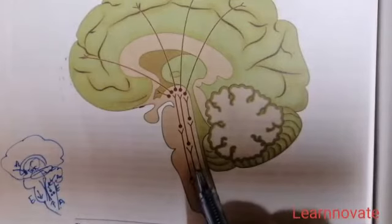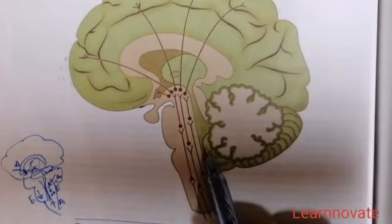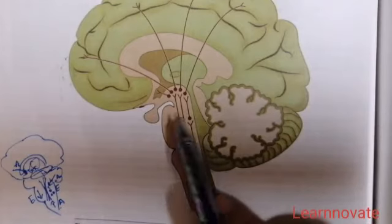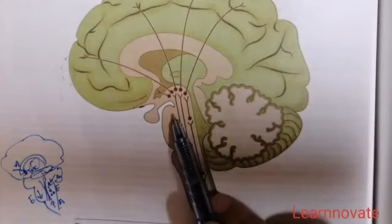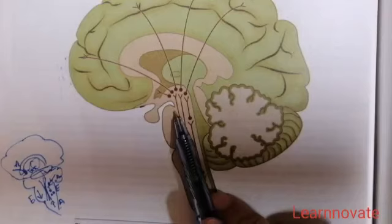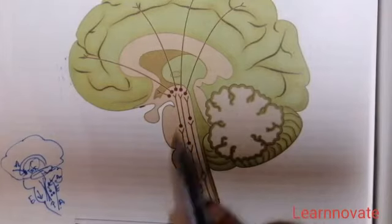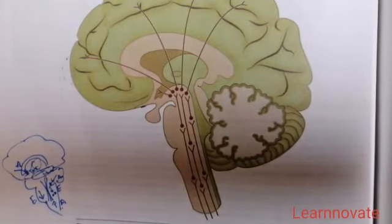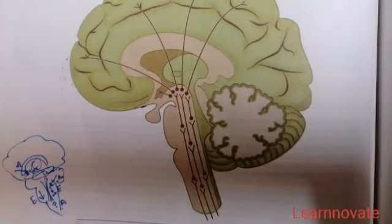The third efferent connection of the reticular formation is with the autonomic nervous system, through the craniosacral outflow and the thoracolumbar outflow. In this way it controls autonomic nervous system activities. This concludes the afferent and efferent connections, and now we will discuss the functions of the reticular formation.